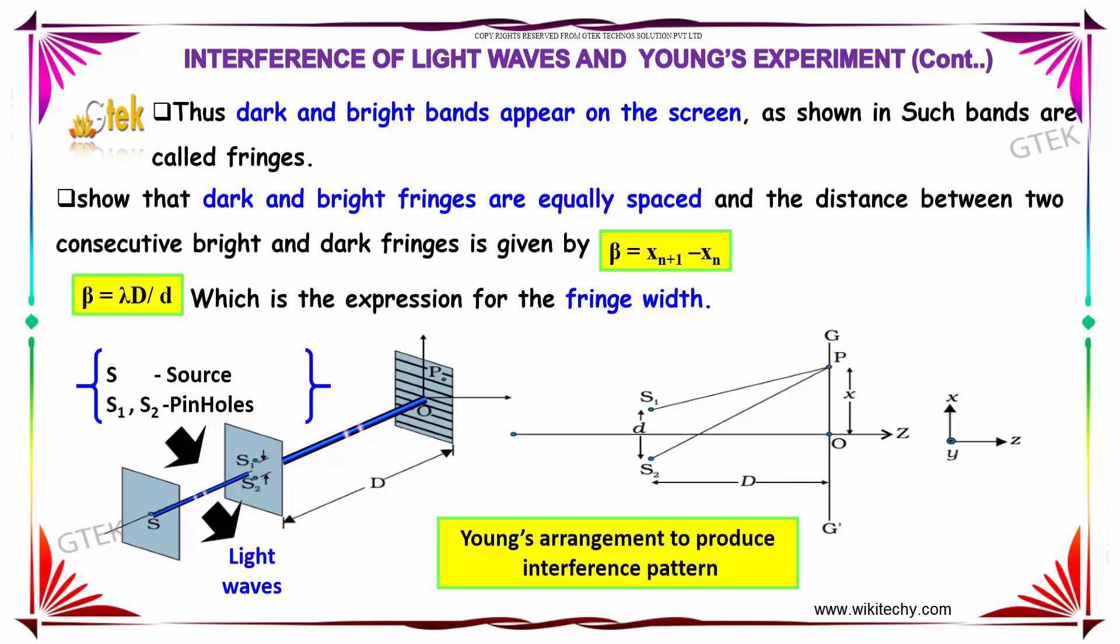It shows that dark and bright fringes are equally spaced, and the distance between two consecutive bright and dark fringes is given by β = xn+1 - xn, where β = λD/d, which is the expression for the fringe width.